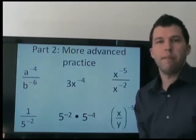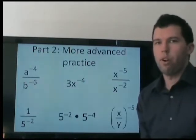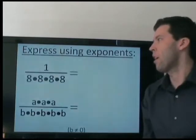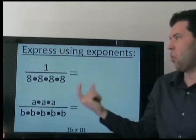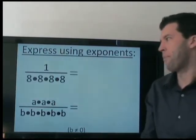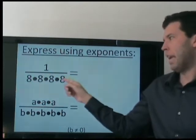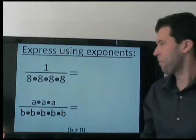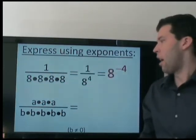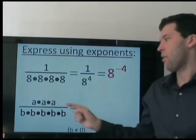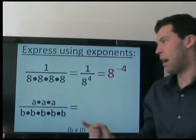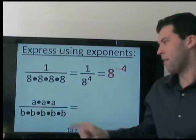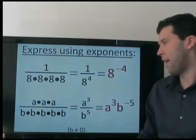Alright, if you understand the basics, I'm now going to go over some more advanced practice. So how can we write these in a shorter, simpler way? We are dividing by 8 four times, so that's a negative exponent. We are multiplying by a three times — that's a positive 3 — and dividing by b five times, so that's a negative 5.